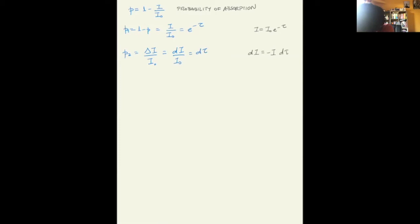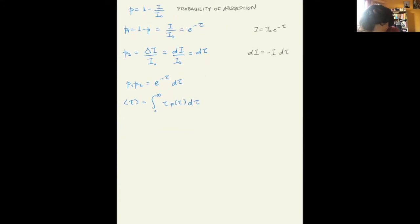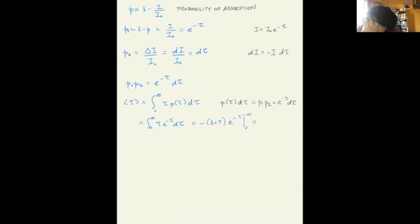So the total probability P1 times P2 equals e to the minus tau times d-tau. That is the total probability of the photon not being absorbed from zero to tau and then getting absorbed in the interval d-tau. Going back to the definition of the average with P(τ)dτ as just defined, we can evaluate the integral. It evaluates to minus 1 plus tau times e to the minus tau, from zero to infinity, which equals zero plus e to the zero, which equals one.